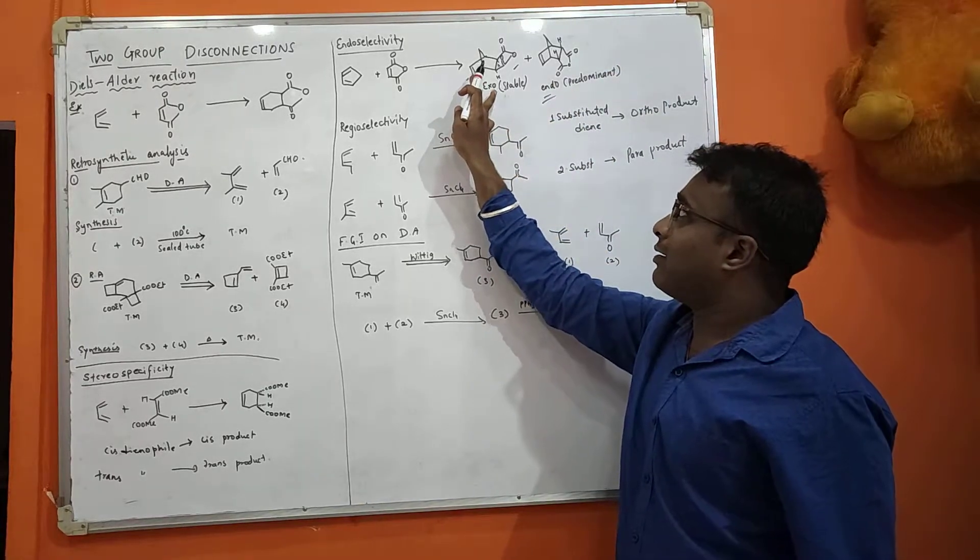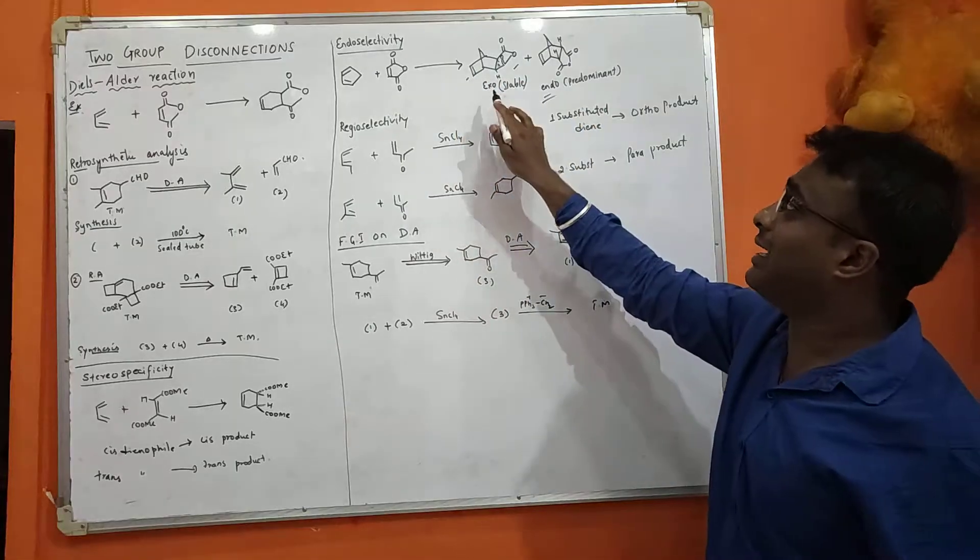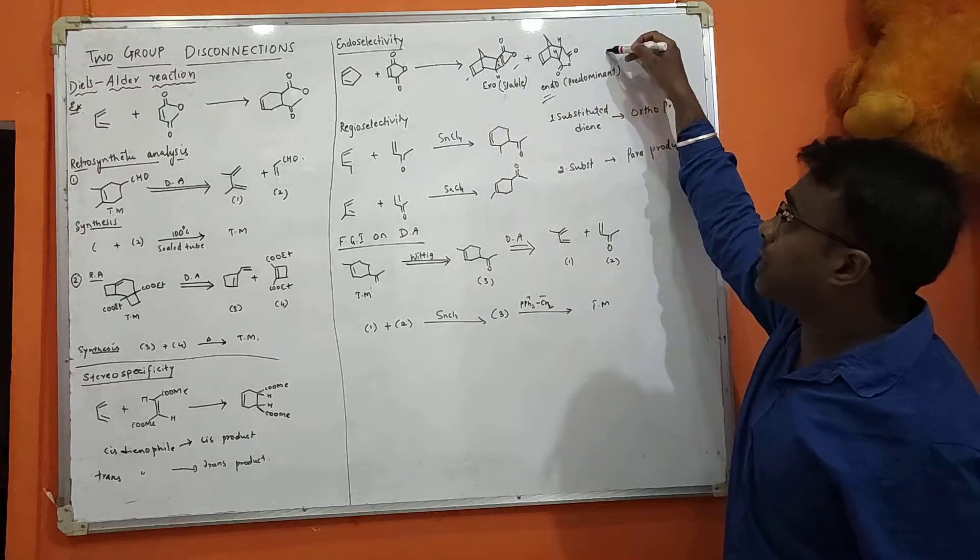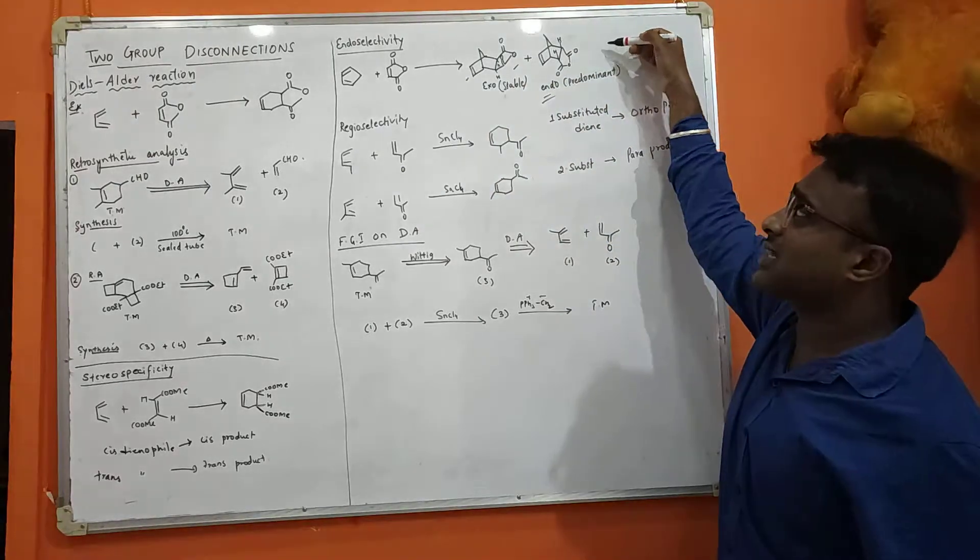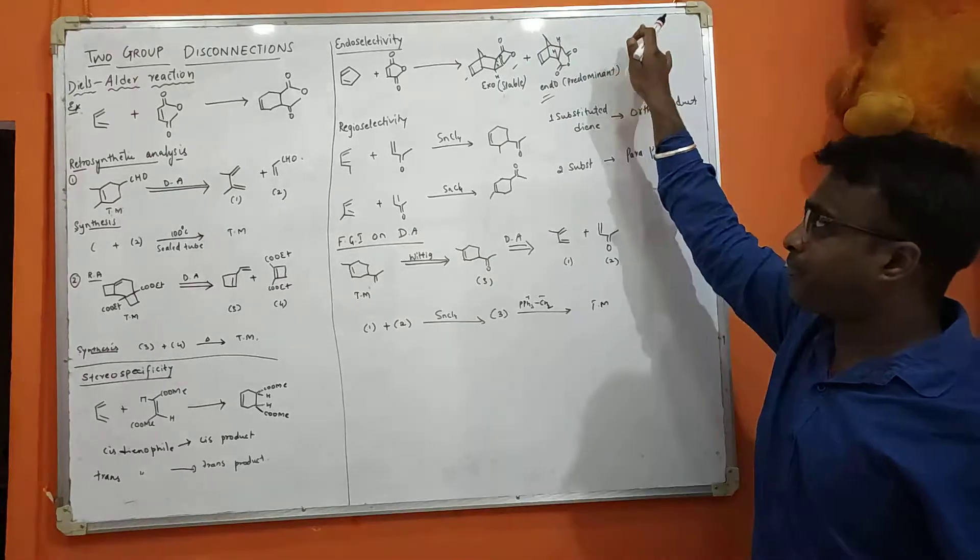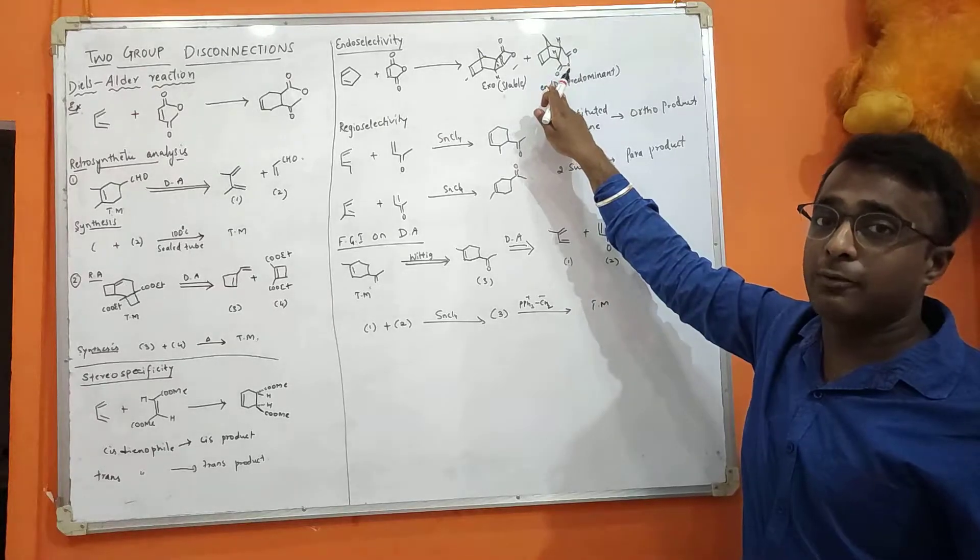Usually, this exo product is the most stable product. But we are getting it in a lesser percentage—this is a minor product. But endo product, being not as stable as the exo, is the most predominant product. Why? Because this endo product is kinetically stable.